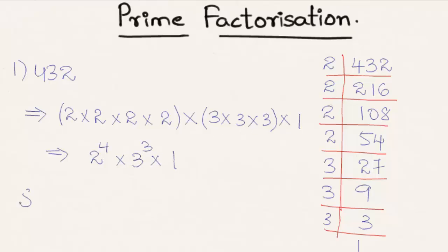So 432 is equal to 2 raised to the power 4 into 3 raised to the power 3.